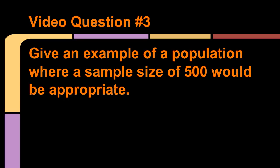Video question number three says, give an example of a population where a sample size of 500 would be appropriate. Write out your answer. Video question number four: give an example of a population where a sample size of 5,000 would be appropriate. Pause while you're writing out your answer and then come back when you're ready for the last question.